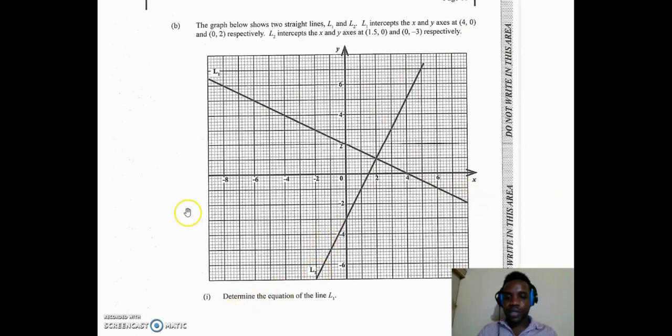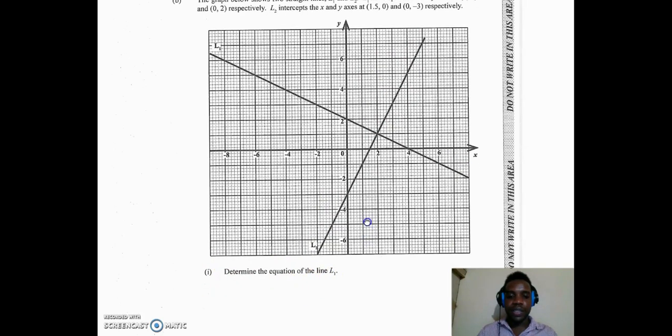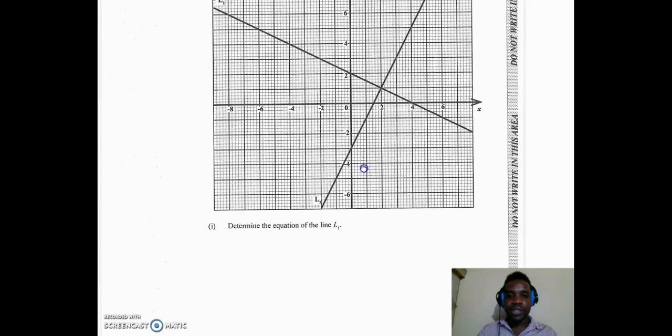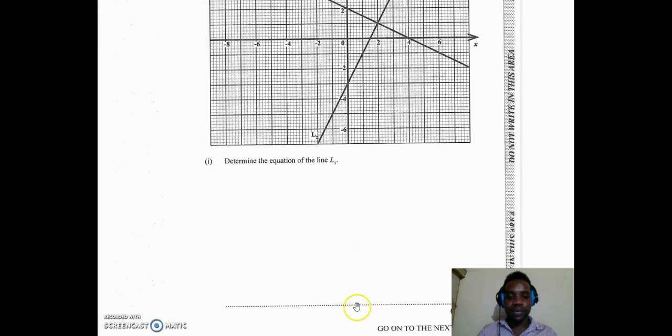The first part of the question, which is B part 1, says determine the equation of L1. To determine the equation, we're going to start by writing down the general equation of a line, which is going to be y equal mx plus c. Now we know that c is the y-intercept, which is where line 1 cuts the y-axis, which we know to be 2 here, and m is the gradient.